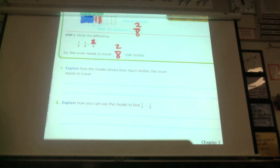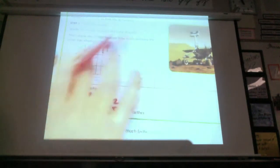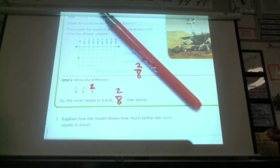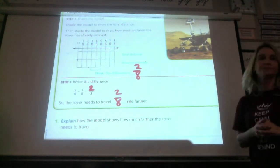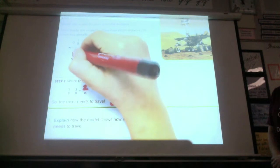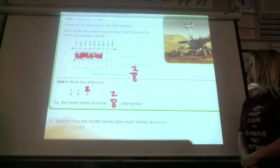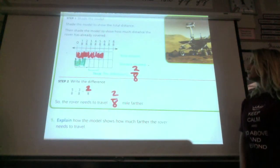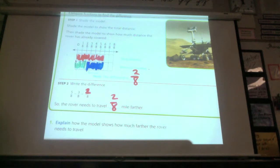All right, explain how you can use the model to find six-eighths minus two-eighths. So if we went back to this and we erased it, how could we use that to show six-eighths minus two-eighths? Go ahead and write it, and I'll have someone come up here and demonstrate it. So Jaden is going to show us how to do six-eighths minus two-eighths on the model. On the model, sweetie. Here. You can use two different colors, too. So do six-eighths on the top one. And then two-eighths on the bottom.